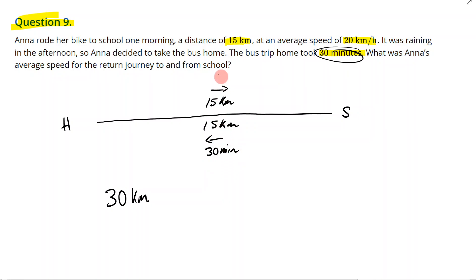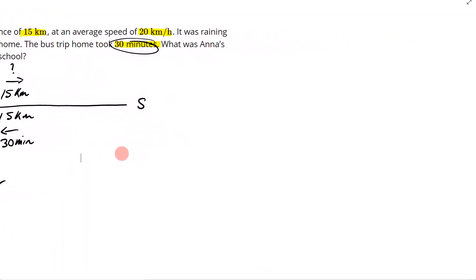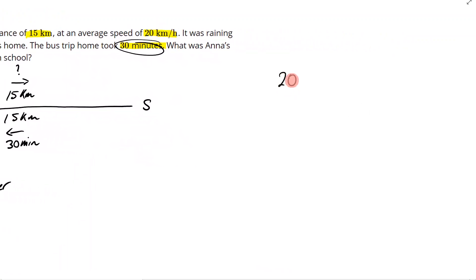But we don't know how long it took her to get to school on her bike. Once we know that, I can write down that she's going 30 kilometers per some total time. But I need to figure out what that time is going to be, so I need to figure out how long it took her to get to school. I'm going to take the speed I was given — on her bike she was going 20 kilometers per one hour.